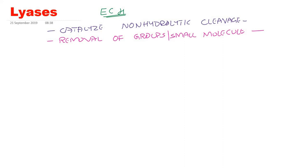Lyases act on carbon-carbon bonds, carbon-oxygen bonds, carbon-nitrogen bonds, and carbon-sulphur bonds. They act on these bonds of the substrate and break that particular substrate into two molecules or two products, and they are called lyases. Bonds broken are carbon-carbon, carbon-oxygen, carbon-nitrogen, or carbon-sulphur.